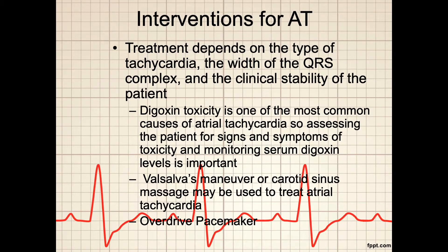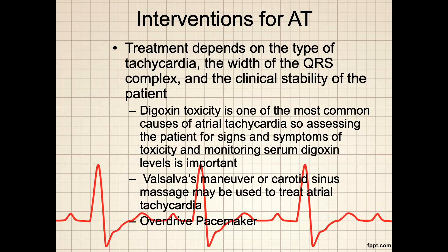Interventions for atrial tachycardia depend on the type of atrial tachycardia, the width of the QRS complex, and the clinical stability of the patient. Remember that digoxin toxicity is a common cause of atrial tachycardia, so assessing the patient for signs and symptoms of digoxin toxicity and monitoring serum digoxin levels is important. Valsalva maneuver or carotid sinus massage may be used to treat atrial tachycardia. Drug therapy used may include digoxin — unless of course the patient is digitoxic — beta-adrenergic blockers, and calcium channel blockers. When other treatments fail or if the patient is clinically unstable, synchronized cardioversion may be used. Atrial overdrive pacing may also be used to stop the arrhythmia. This treatment helps suppress the depolarization of the ectopic pacemaker and permits the SA node to resume its normal role.